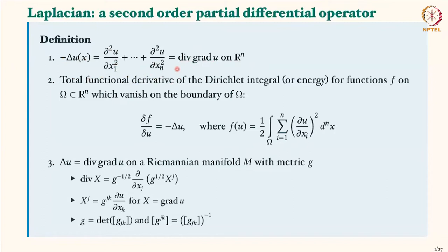You can write this using vector calculus operators: divergence and gradient — the Laplacian is divergence of gradient. This holds true not just in ℝ² or ℝ³ but in ℝⁿ more generally. Another equivalent definition is that it's the functional derivative of the Dirichlet integral, or Dirichlet energy, which involves some variational calculus. The important definition — the one this talk has in its title — is the Laplacian on a Riemannian manifold with a metric g.